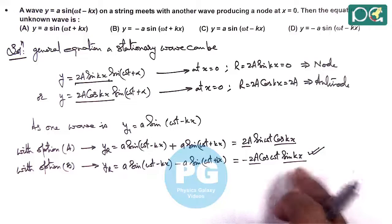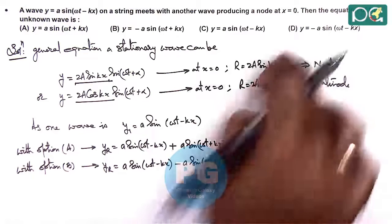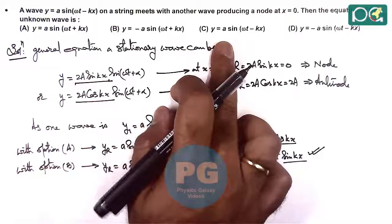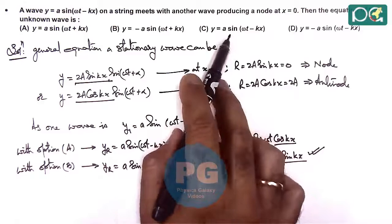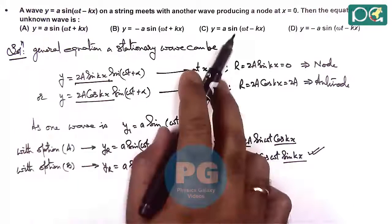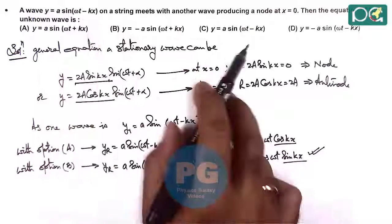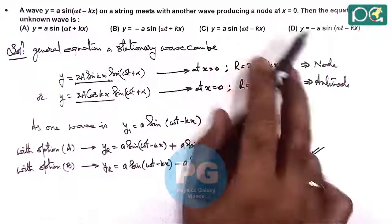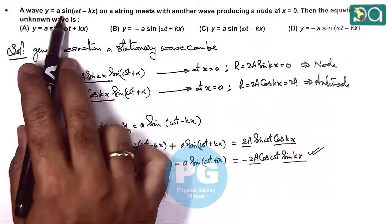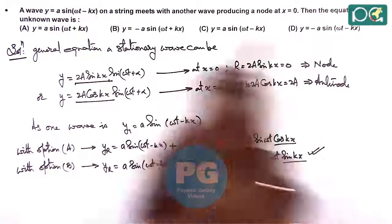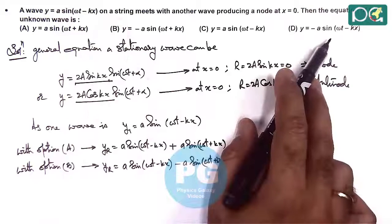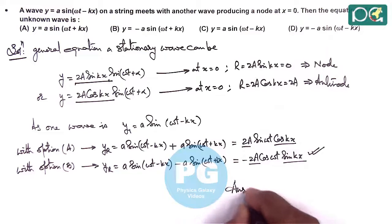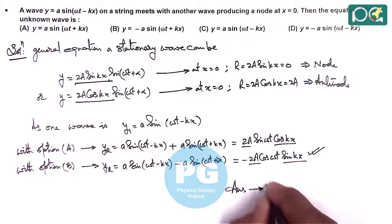At x = 0, the resulting amplitude becomes zero, confirming a node. We can also check options c and d: option c is the same wave as the first wave, so adding them will not result in a stationary wave since both travel in the same direction. Option d, when added, results in zero displacement, so no stationary wave is obtained. Therefore, the answer to this question is option b.